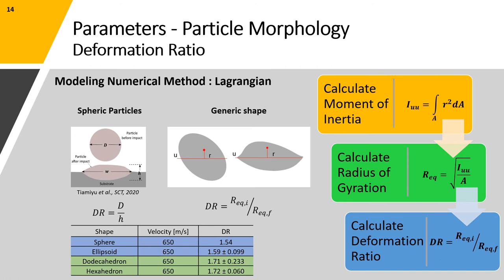As can be seen in the table below, for particles with different morphologies, but constant masses and impact velocity equal to 650 meters per second, we can see an increase in the average value for the deformation ratio as the irregularity of the particle increases.